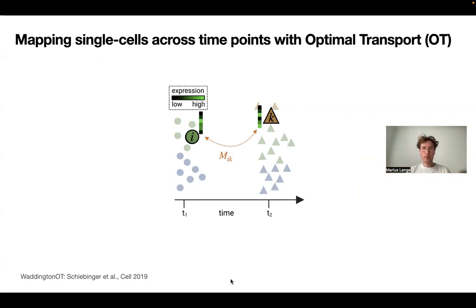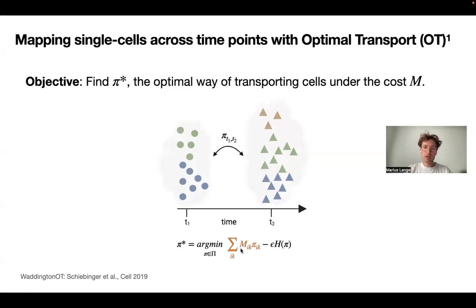So in an optimal transport formulation, we write down a cost function, a cost matrix M that tells us how expensive is it in terms of gene expression to move one cell from T1 to T2. And we can optimize over that with this objective function, as you can see down here, some regularization to recover the ideal coupling between these two time points that tells us how likely are cells from T1 to transitioning to cells from T2.